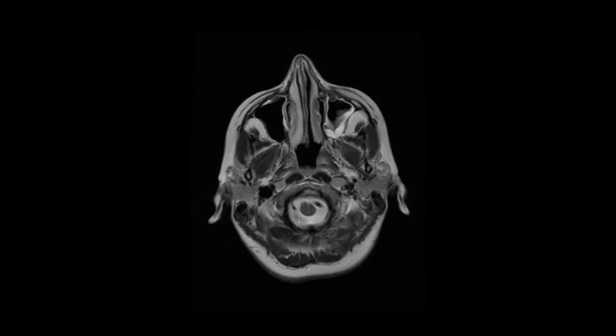If we come down a couple of slices even still, this represents the eventual emptying of CSF into the cisterna magna — the big CSF space at the level of the foramen magnum.